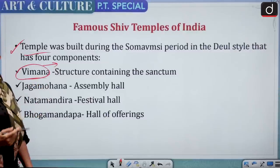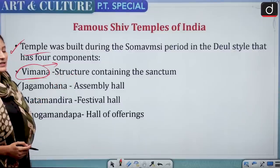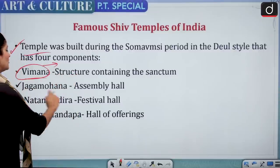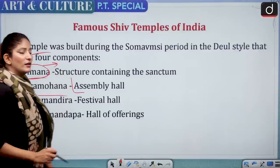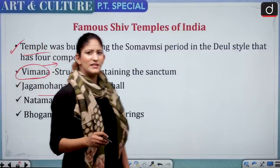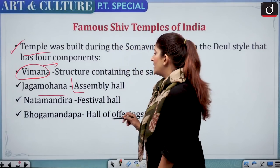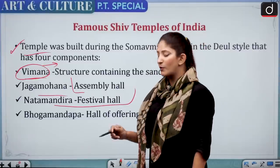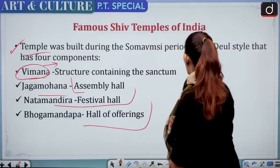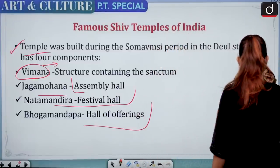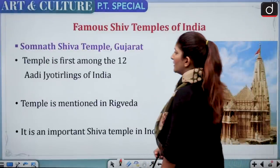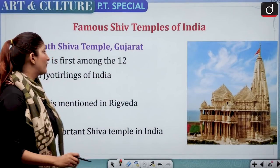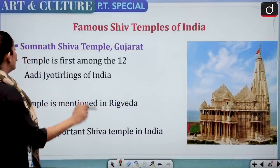The Lingaraj temple was built during the Somavamshi period in Deul style, which has four components: Vimana — the structure containing the sanctum or garbhagriha; Jagmohan — the assembly hall; Nata Mandira — the festival hall; and Bhoga Mandapa — the hall of offerings.